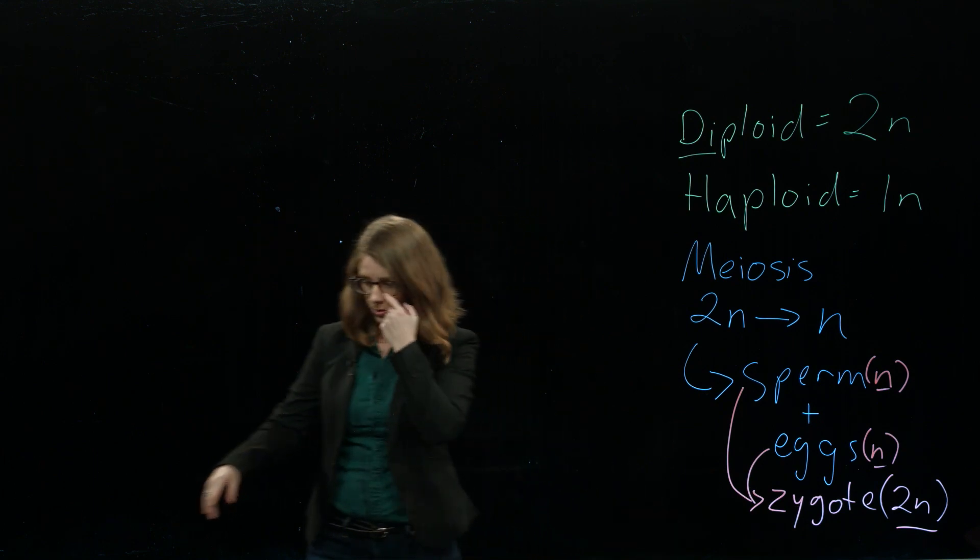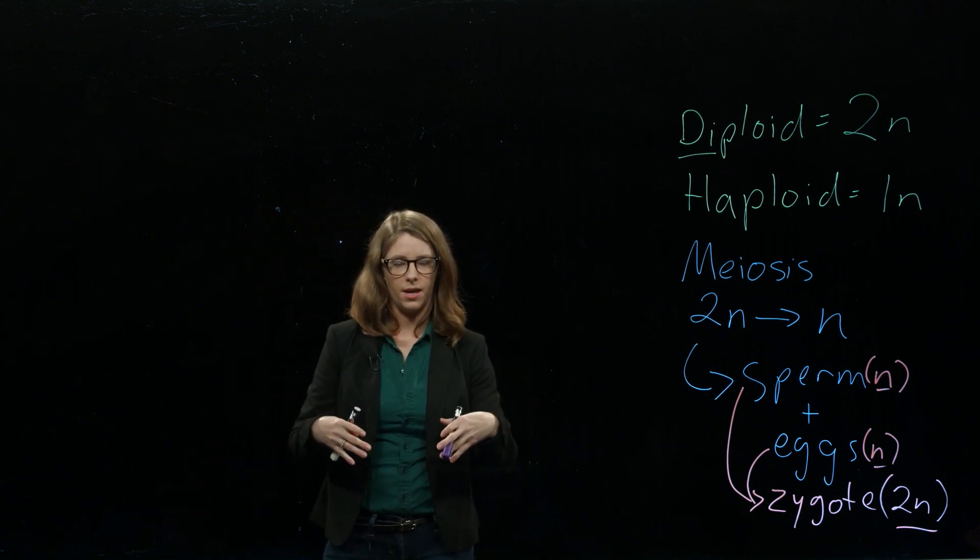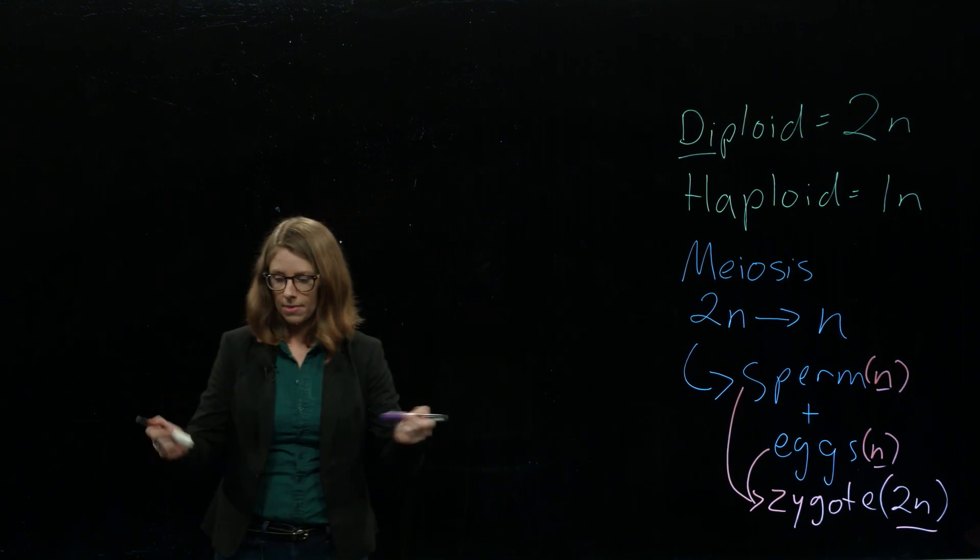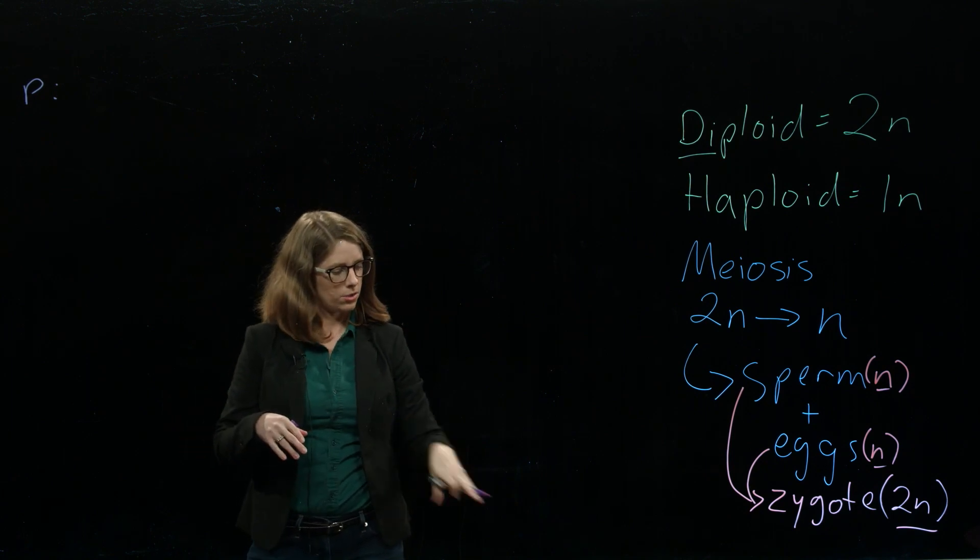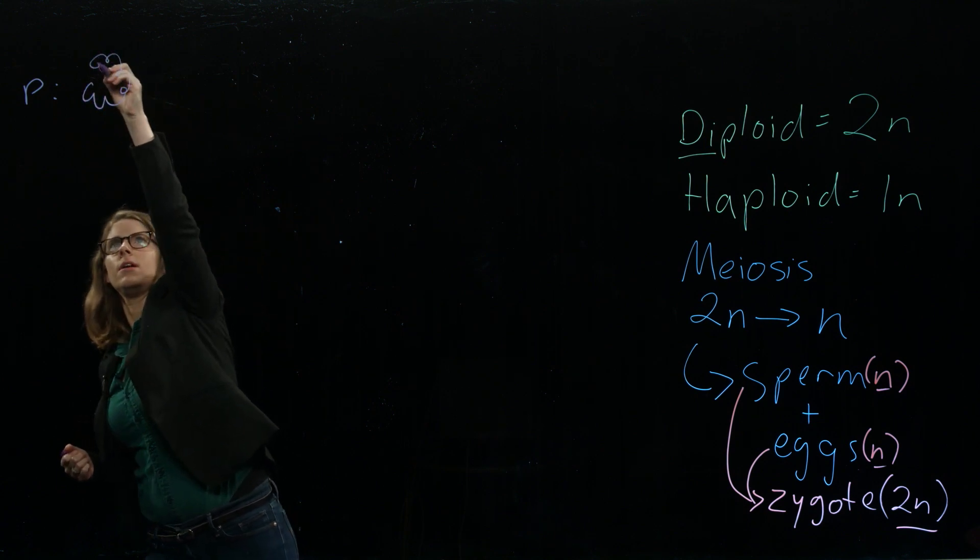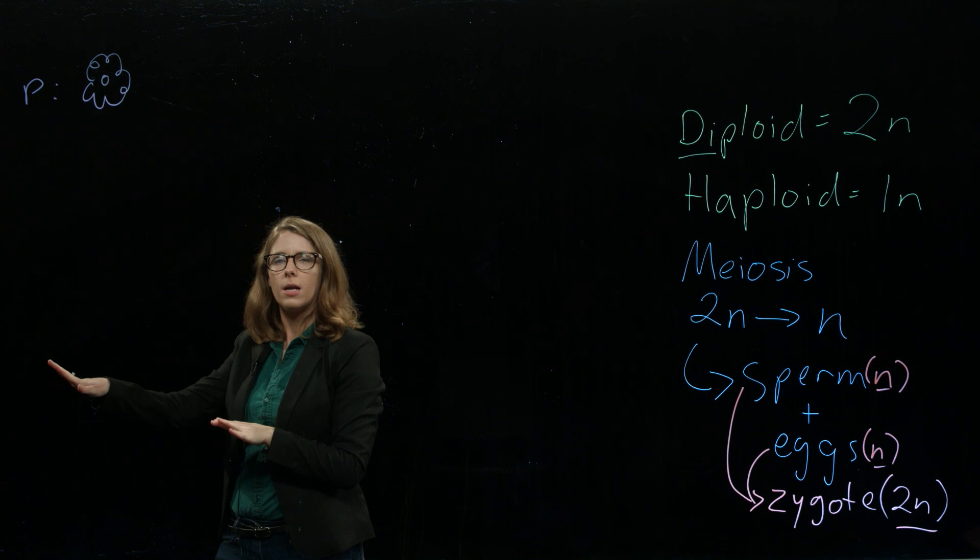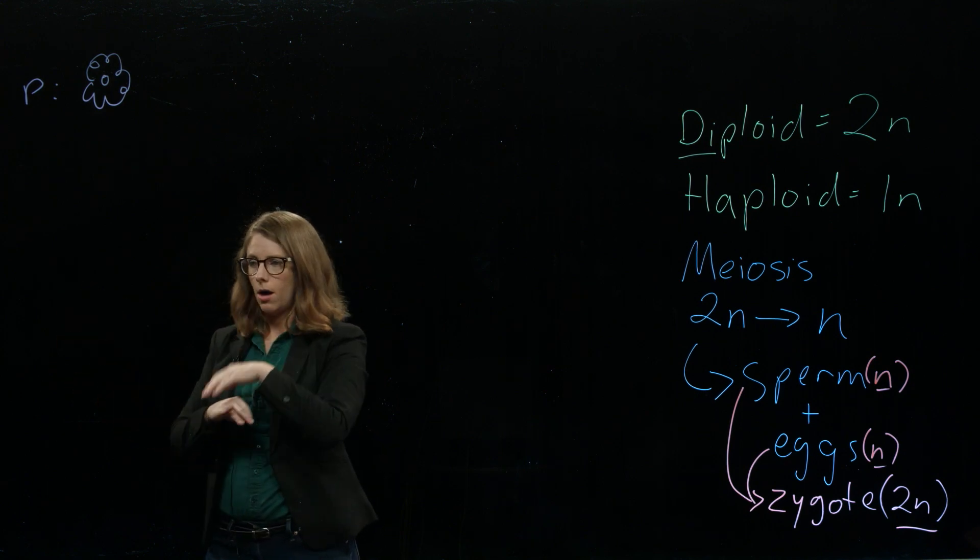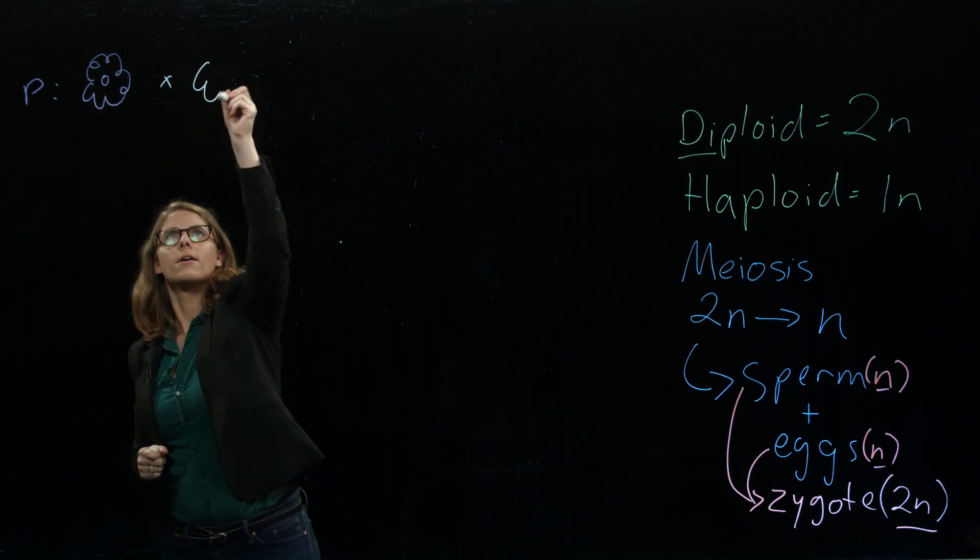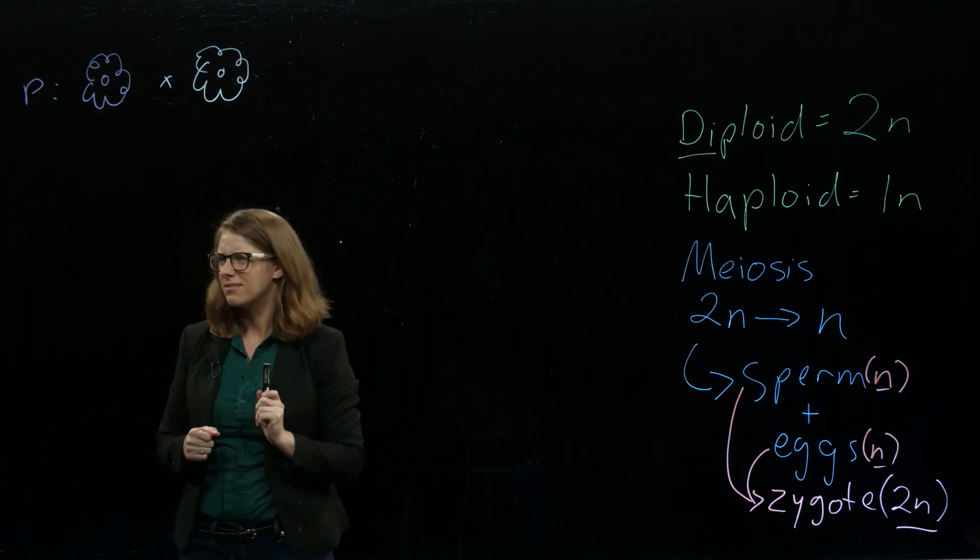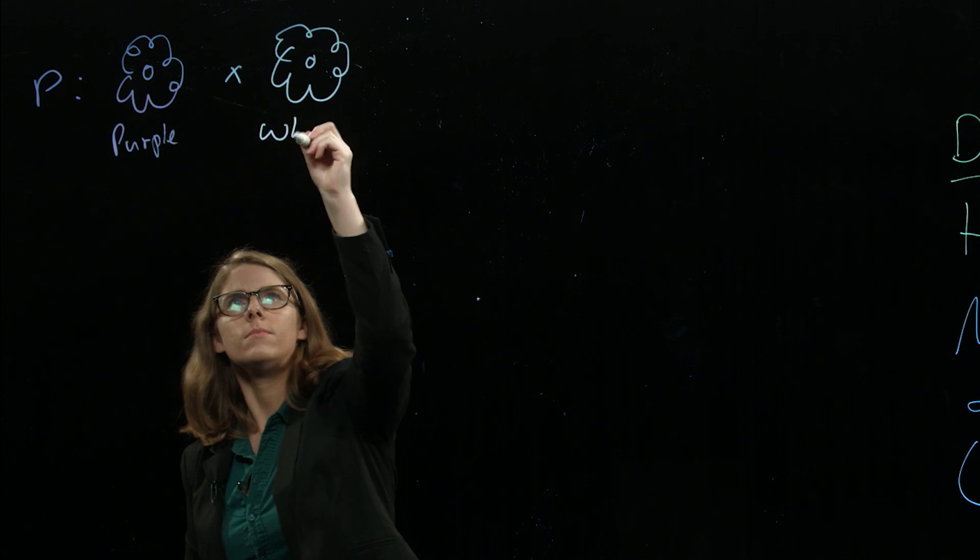So what he did, I'll draw it for you. So he would have these pea plants of all these different kinds of peas, all these different traits, and he would cross them and see what kind of offspring they got. So what he did is the first generation, what we call the P generation for parent generation. He crossed purple flowers. So he crossed purple flowers. They were what we call true breeding purple flowers. So what true breeding is, is that they come from a long line of purple flowers. Their parents are purple, their grandparents are purple, all their cousins are purple. All they are is purple in their entire family. So that's going to mean something later on. He crossed them with a white flower. So he crossed purple with white.